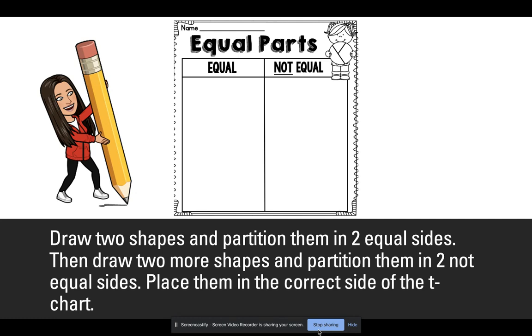Then draw two more shapes and partition them into not equal sides. Place them in the correct side of the T-chart. Good luck!